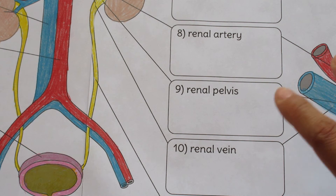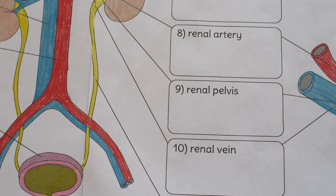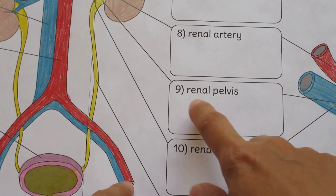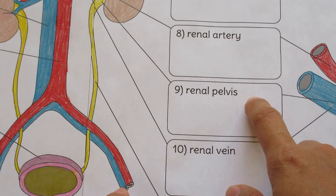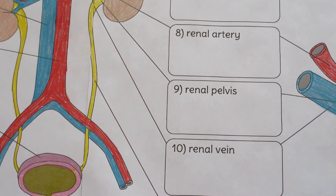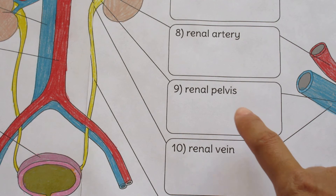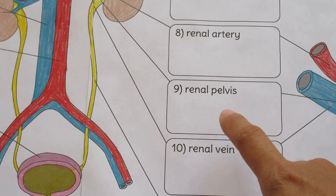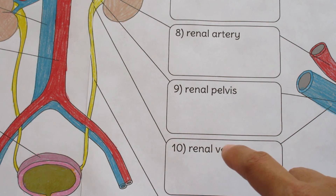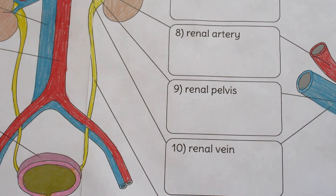Another one of the options I provide looks very similar to this, but the labels are actually replaced by blanks. This is for more advanced students for whom you might want to ask questions like, does anyone know the name for structure number nine, structure number ten? This will allow for more participation.